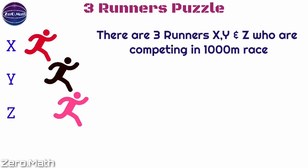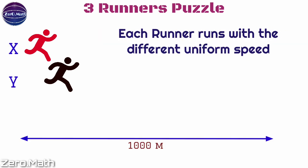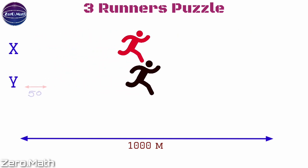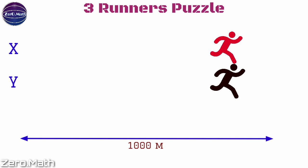If X and Y are competing, then X gives Y a start of 50 meters so that they will finish the race at the same time.